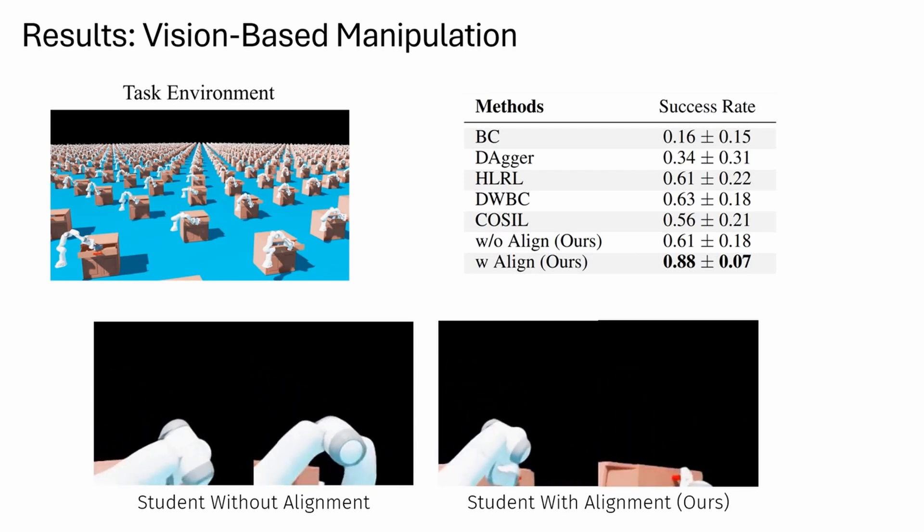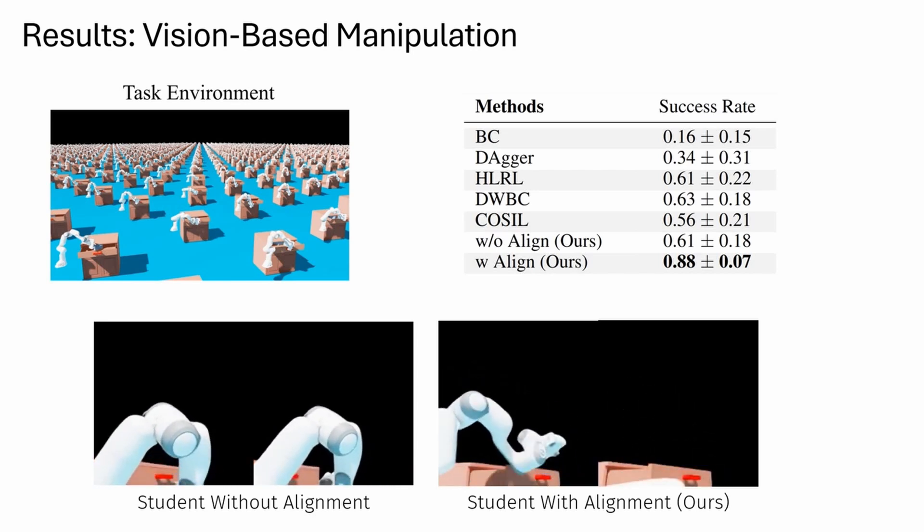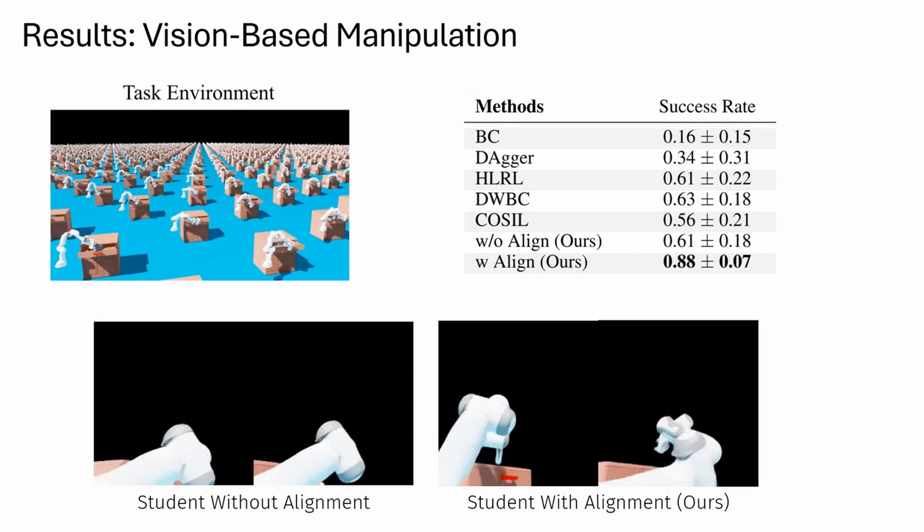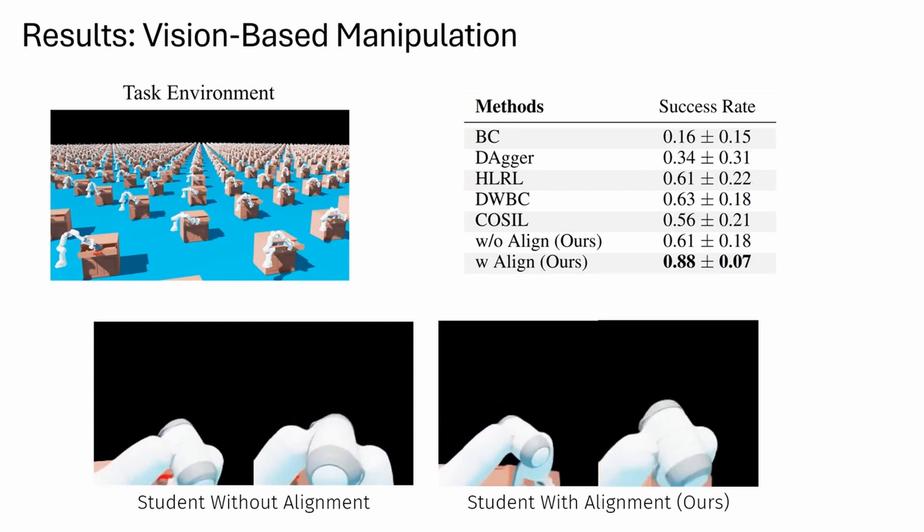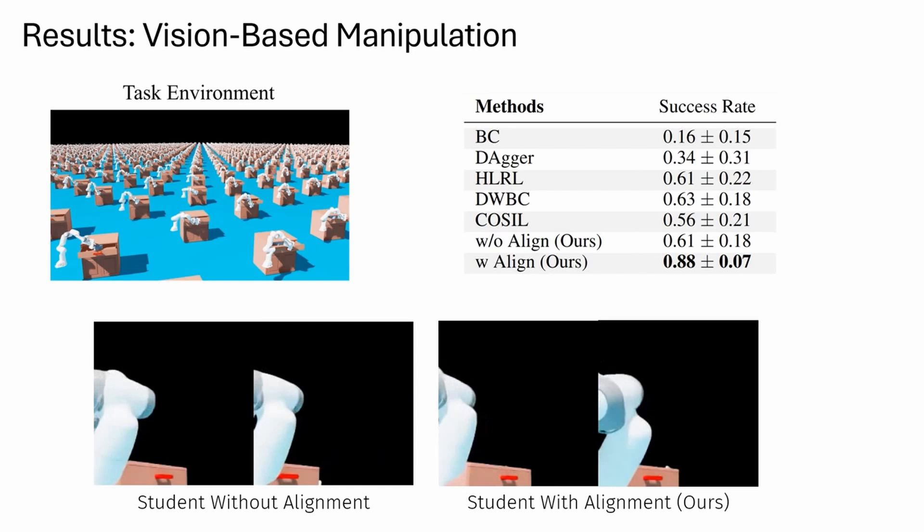The results show that our method with alignment improves success rates by 17% compared to the non-aligned framework. Moreover, as can be seen in the visualized student rollouts, the student and teacher learn to keep the red handle visible right before the gripper touches it.